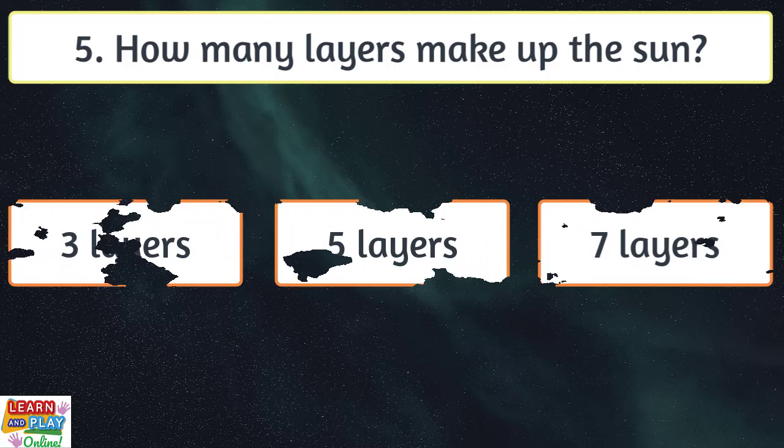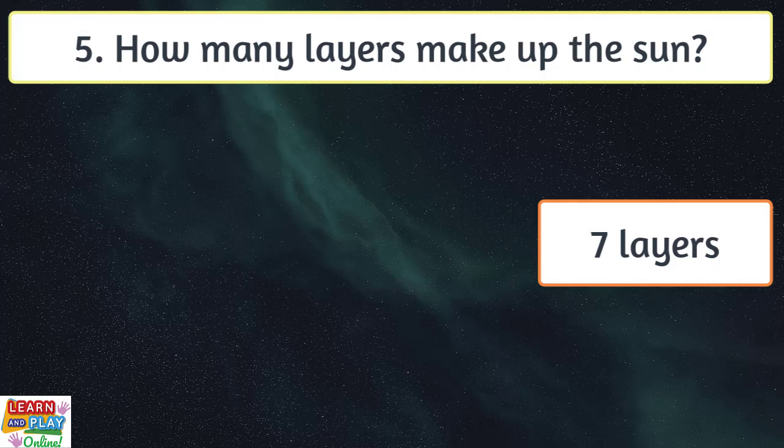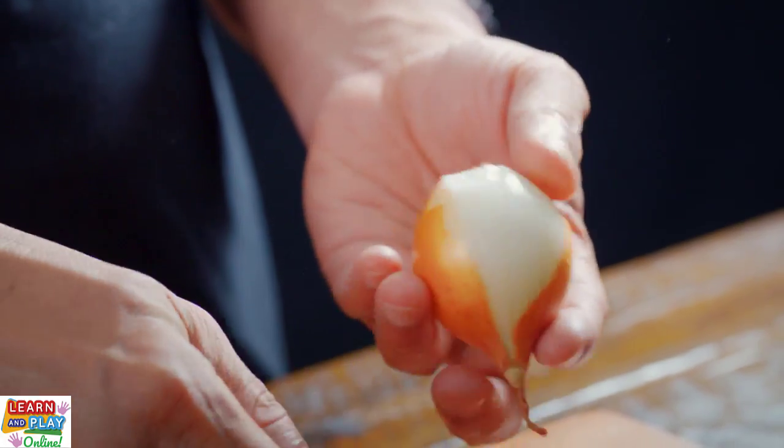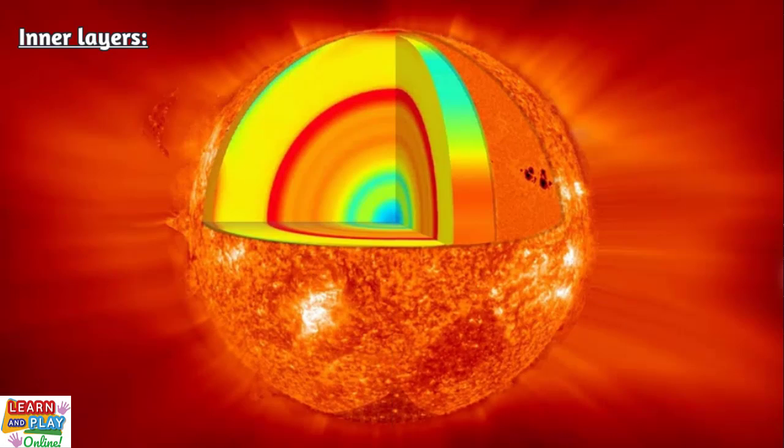Question five. How many layers make up the sun? Seven. You can think of the structure of the sun like an onion. There are several layers to it, seven to be exact. There are three inner layers of the sun: the core, radiative zone,